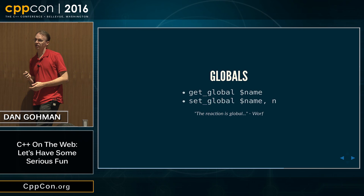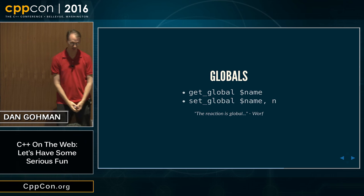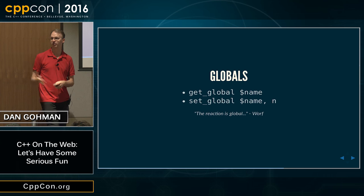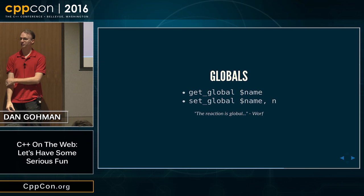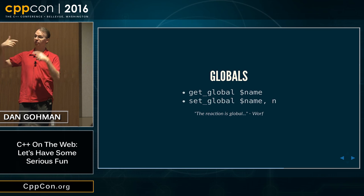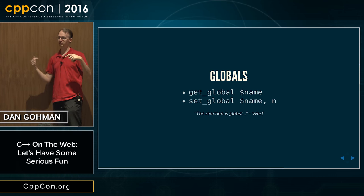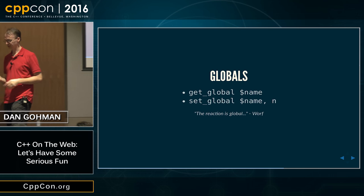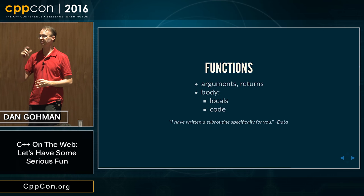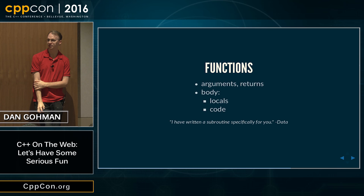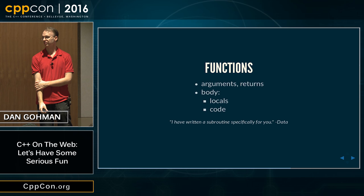Globals in WebAssembly are literally global variables — like global variables in C++ — except they don't live in the address space and can't have their address taken. A smart compiler could compile a C++ global variable into a Wasm global variable if it can prove the address is not taken. The nice thing about globals is they can be imported and exported with much tighter granularity than the entire address space. Functions basically just contain a signature with argument and return types, and a body with local variables and code. WebAssembly doesn't have any syscall or I/O instructions — the only way to talk to the outside world is through imports and exports.